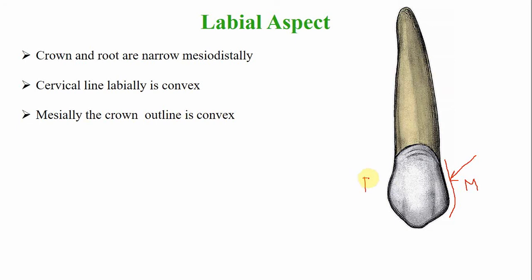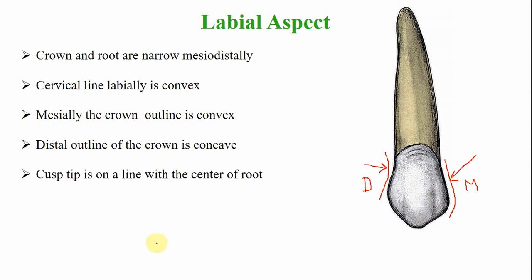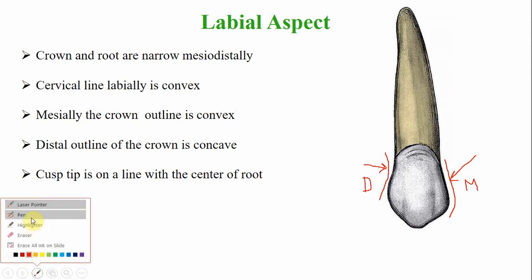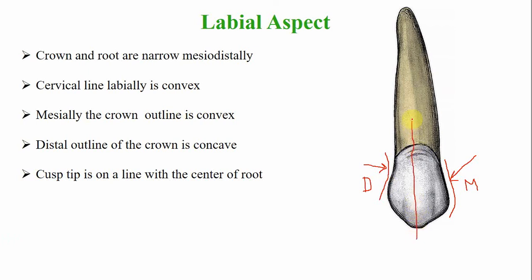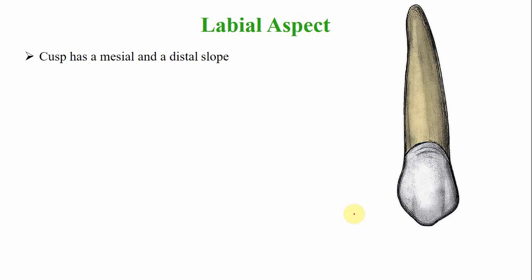The distal outline of the crown is concave. The cusp tip is in line with the center of the root. The cusp tip forms two slopes: a mesial cuspal slope and a distal cuspal slope. This is the mesial side and this is the distal side of the tooth.